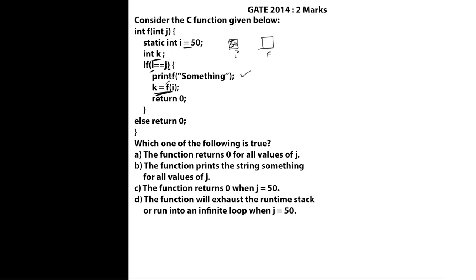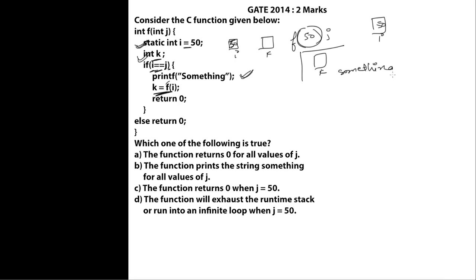So if the user passes the value of 50 for variable j, we call f(50) recursively. In that case, the statement executes: i is 50, k is declared, i equals j so the printf executes, and then the recursive call passes 50 again. This means all these statements will be executed again and again — the program goes into an infinite loop.